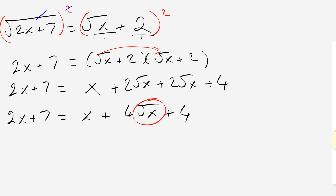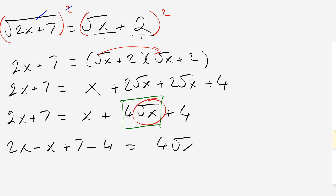So what we're actually going to do is square both sides again to get rid of this square root term. But before that, I'm going to isolate the square root term — make sure it's the only term on one side, with all other terms on the other side. So: 2x minus x plus 7 minus 4 equals 4 root x, which gives x plus 3 equals 4 root x.